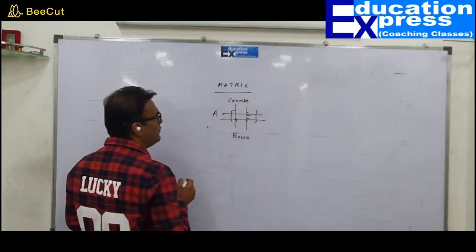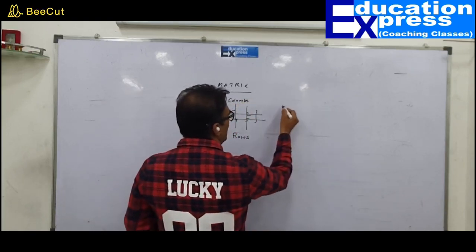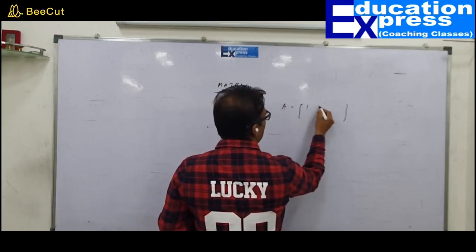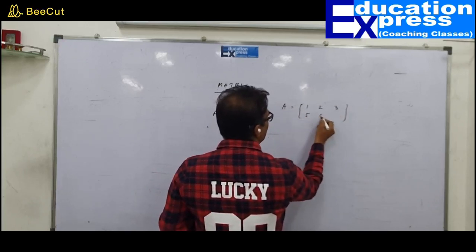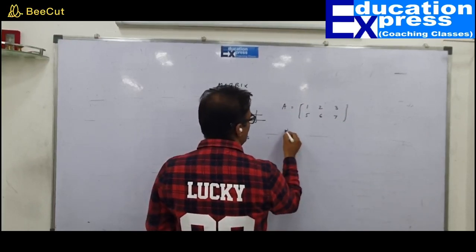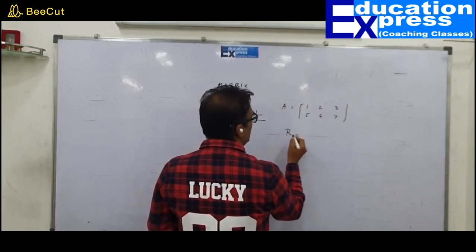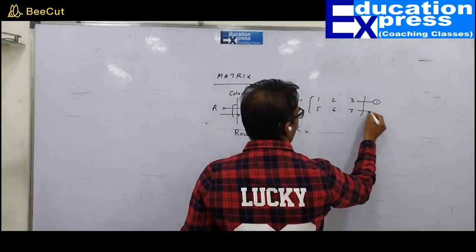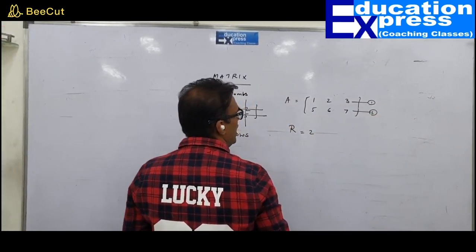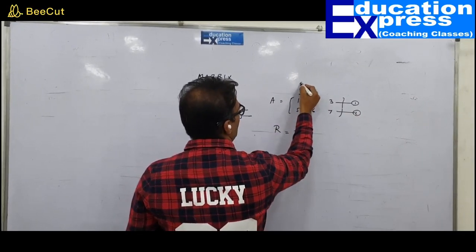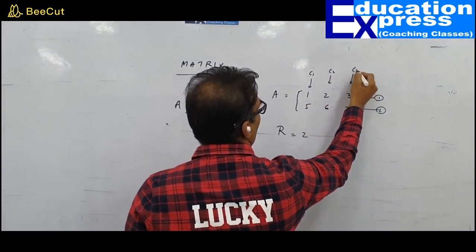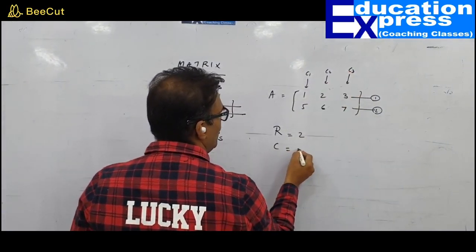Why is it called a rectangular form? Because horizontal arrangements are called rows and vertical arrangements are called columns. For example, if I have a matrix with elements 1, 2, 3 in one row and 5, 6, 7 in another row, there are 2 rows and 3 columns. A matrix is always defined by rows into columns.